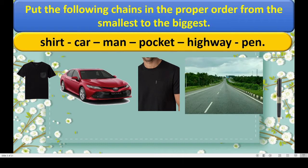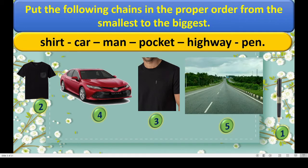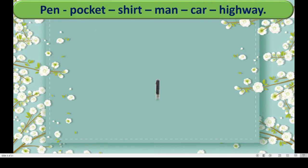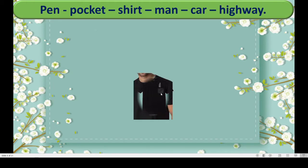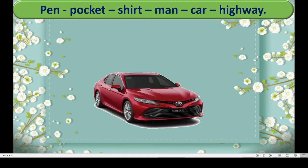First we will give them numbers. The smallest is pen, so I am giving it number one. Second is shirt — pocket and shirt. Then third is man. Man will sit inside the car. And car will run on the highway. So the order is: pen is inserted in the pocket, and shirt comes — the man is wearing this shirt. Now man is sitting inside the car. And car is running on the highway.